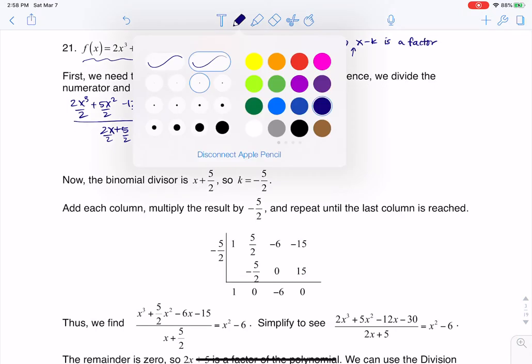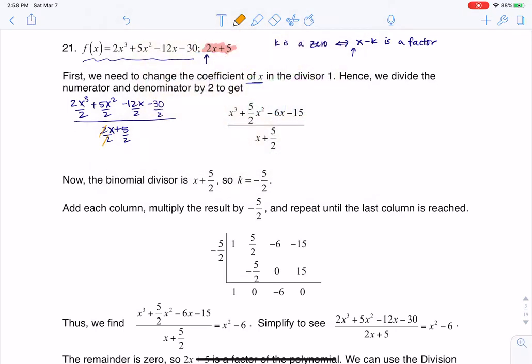If I do that, let me change colors, then this will divide out, and that's why I have that lead coefficient of 1. So that's what you would have to do just to get set up to use the factor theorem.